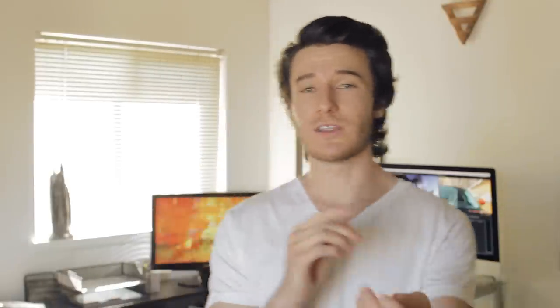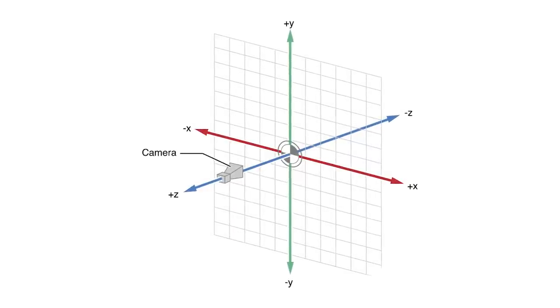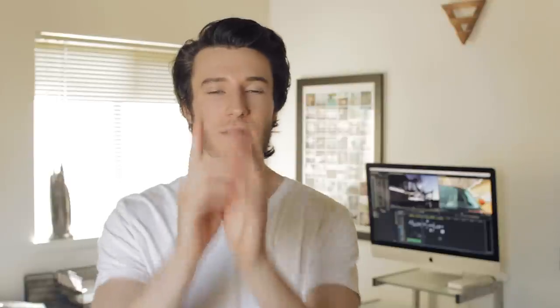So this movement can be used in a three-dimensional axis — forward and back, left to right, up and down. Each camera movement has its own unique aesthetic.